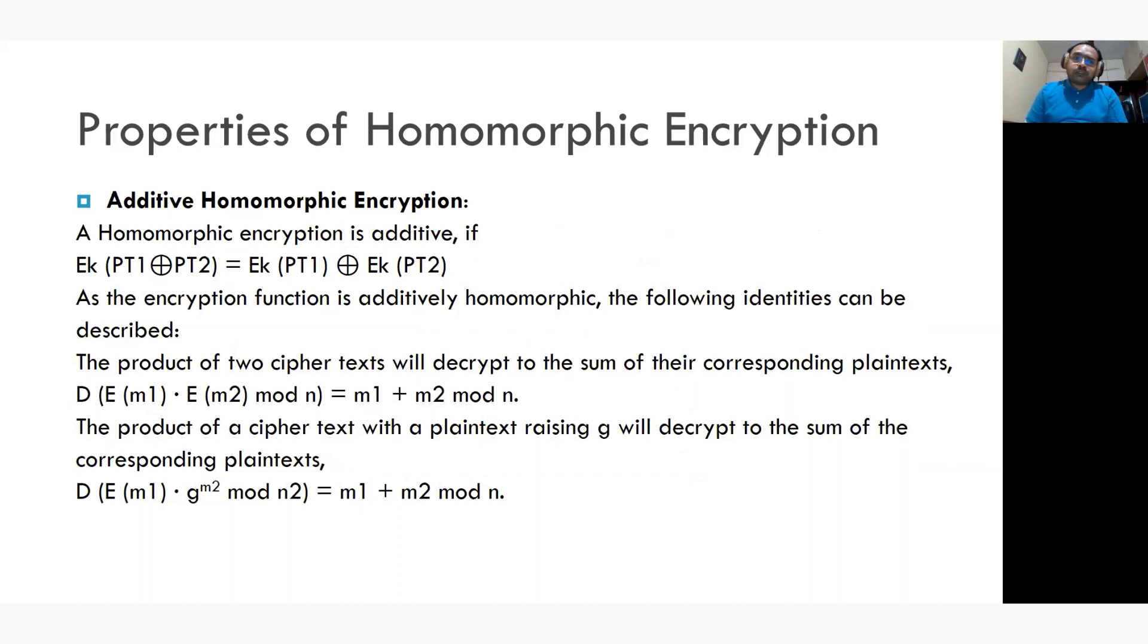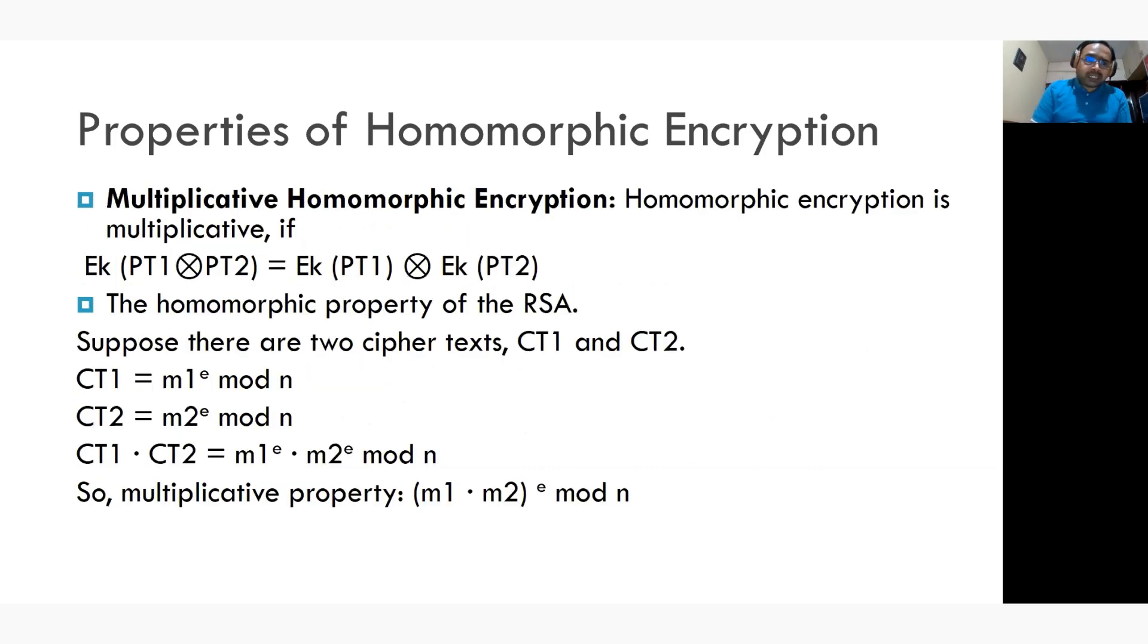Now, there are two basic properties of homomorphic encryption. One is additive property and second one is multiplicative property. In additive property, you are going to encrypt the sum of PT1 and PT2, which is equivalent to adding encryption of PT1 and encryption of PT2. Similarly, in multiplicative property, you encrypt the product, which is equal to encryption of PT1 multiplied by encryption of PT2.